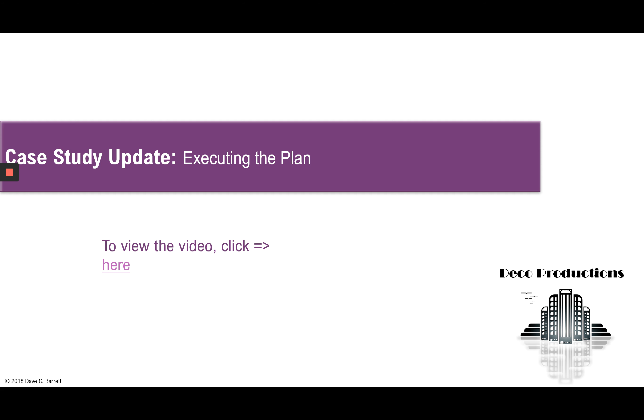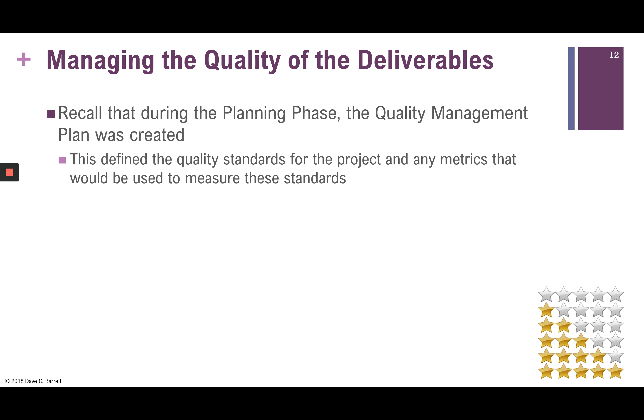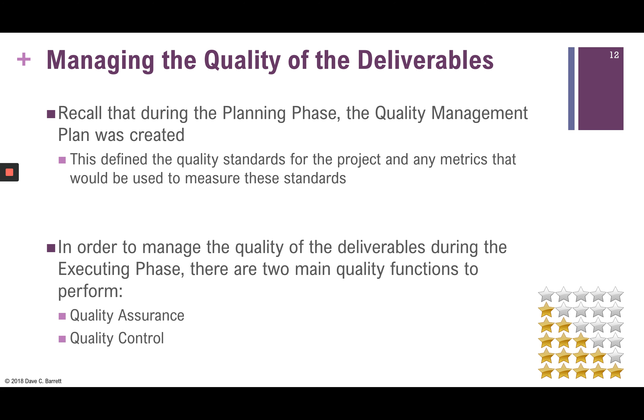Please refer to your textbook and read the case study update called 'Executing the Plan' in the appropriate chapter. Moving on to managing the quality of deliverables — this is a key item within this chapter. During planning, the quality management plan was created, defining quality standards and metrics. During the executing phase, there are two main quality functions: quality assurance and quality control.